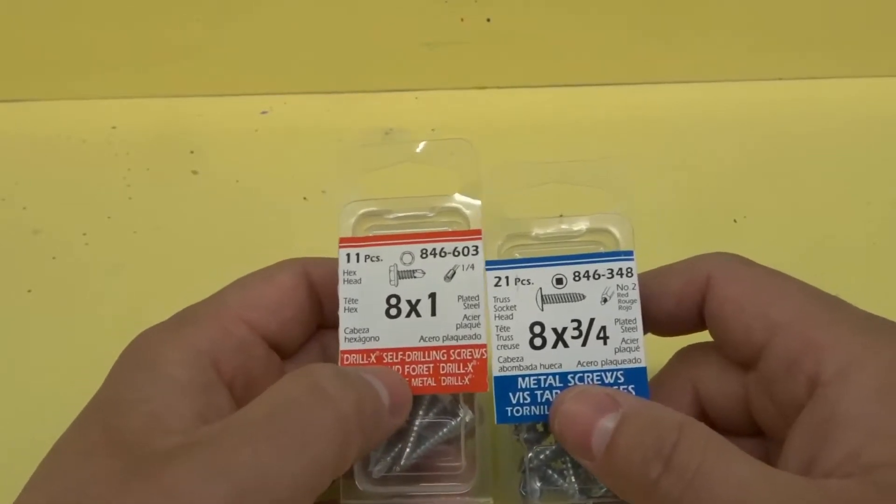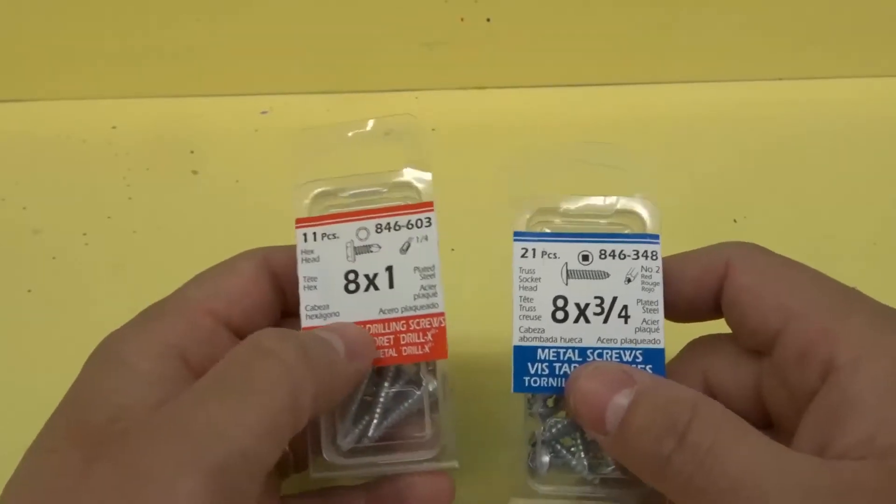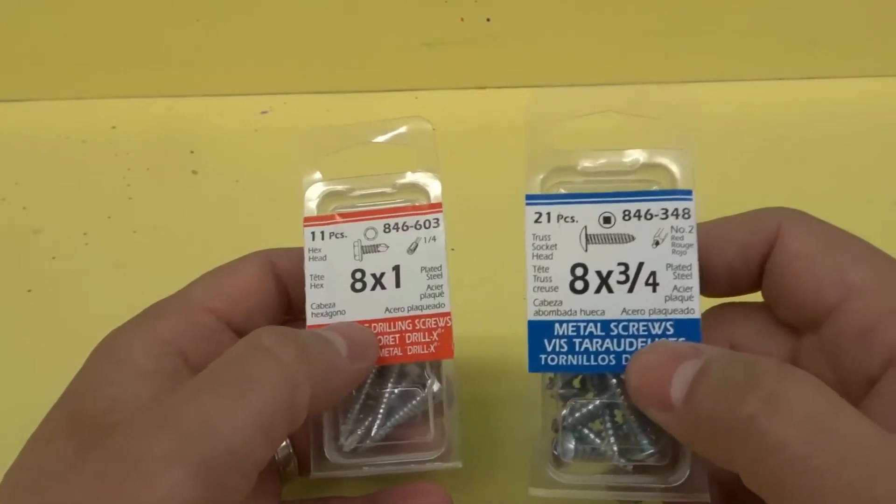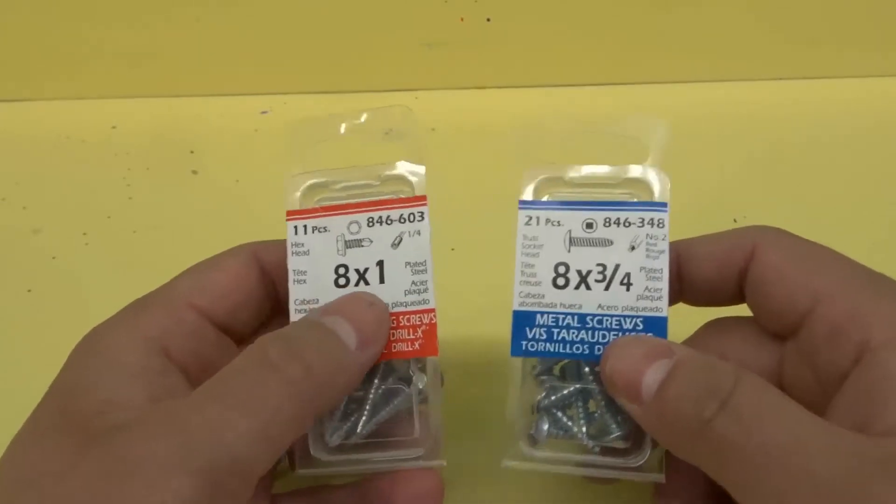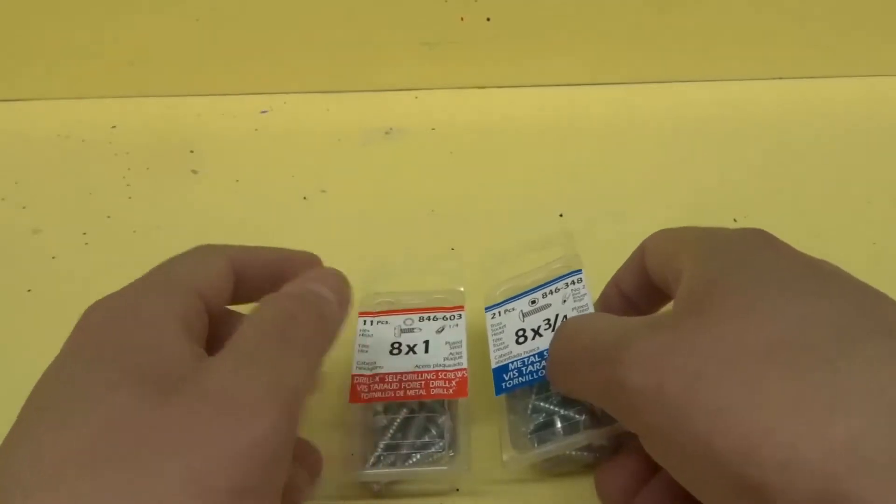As you can see, on the left I have some self-drilling screws and on the right I have some self-tapping metal screws. Many people get these mixed up, so I want to clear up the air.